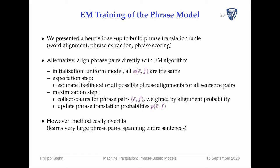What we just described is a fairly heuristic setup to build phrase translation tables — it might come across as a bit hacky and not mathematically beautiful, given we just had this elegant EM algorithm. It's actually possible to also apply the EM algorithm to align phrase pairs directly: initialize all phrase pairs equally, then the E-step looks at all possible phrase alignments, and the M-step collects counts.